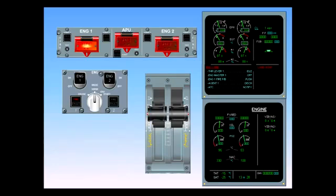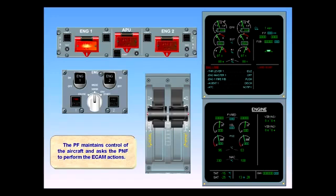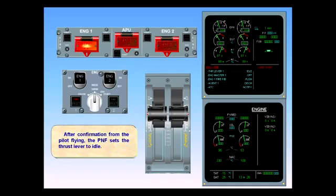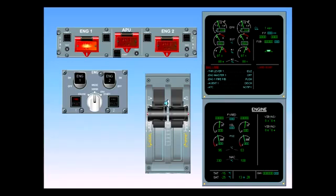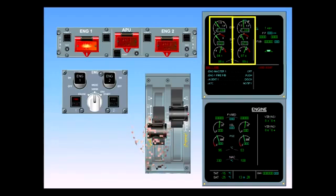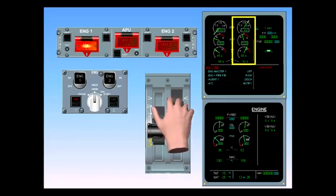The pilot flying maintains control of the aircraft and asks the pilot not flying to perform the ECAM actions. After confirmation from the pilot flying, the pilot not flying sets the thrust lever to idle. Engine one is spooling down. Engine two is accelerating to compensate for the thrust loss. You now have exactly the same situation as for an engine failure. So the pilot flying sets thrust lever two to MCT.